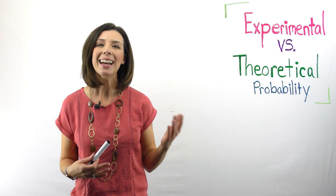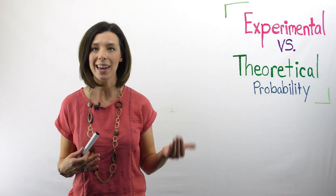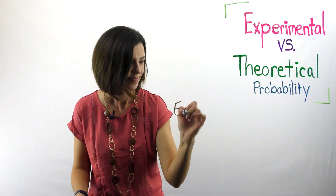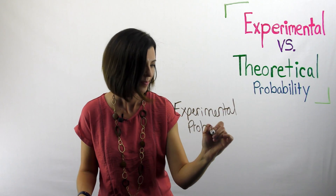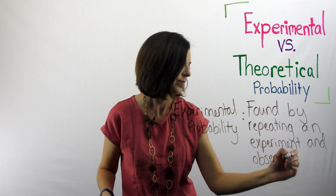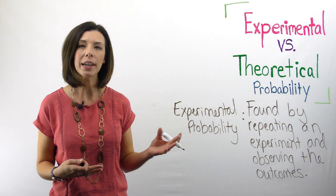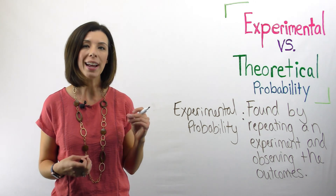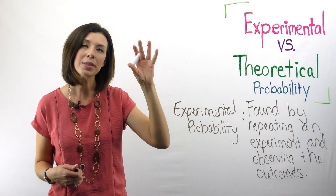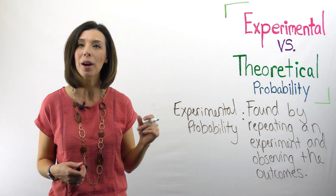Experimental probability is found by doing an experiment and observing the outcomes. We have a different equation for how we think about this. For experimental probability, we write our fraction as the number of times the event occurs out of the total number of trials.